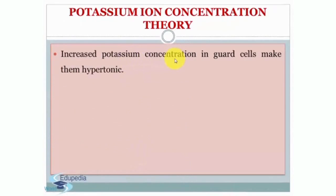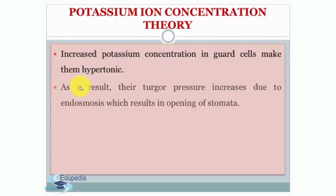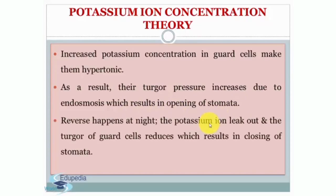Increased potassium concentration in the guard cells makes them hypertonic. As a result, their turgor pressure increases due to endosmosis, which results in opening of stomata. The reverse happens at night — potassium ions leak out and the turgor pressure of guard cells reduces, which results in closing of stomata.